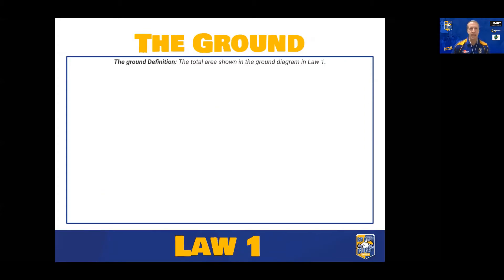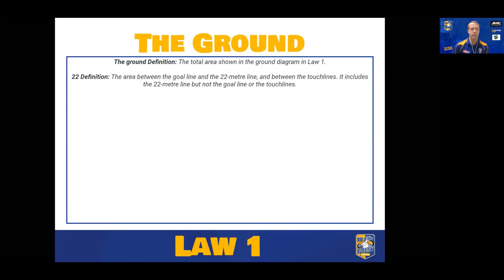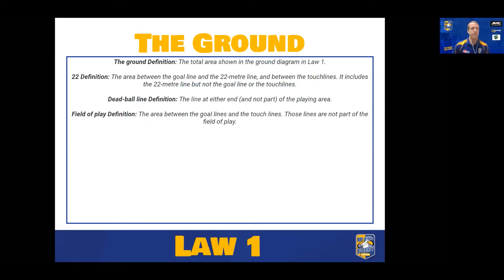Law one: the ground. There are quite a few definitions here. The ground is defined by the area shown in the diagram. The definition of the 22 is the area between the goal line and the 22-metre line, between the touch lines — it includes the 22-metre line but not the goal line or touch lines. That's really important, particularly when talking about gaining ground for kicks. The dead ball line is at either end of the field and is not part of the playing area. The field of play is the area between the goal lines and touch lines — it doesn't include the end goal area or those lines.